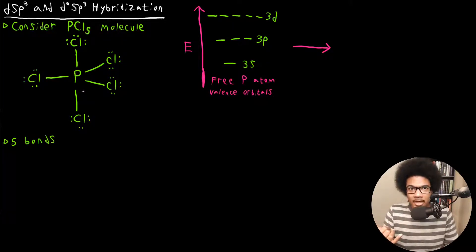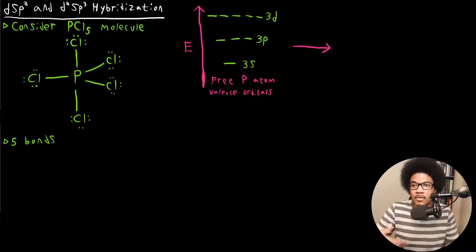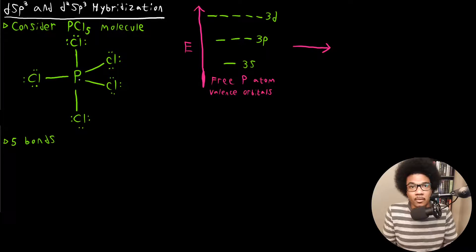SP3 is not going to do that. SP2 or SP is not going to do that. So clearly we need a different hybridization scheme in order to form this PCl5 molecule. Phosphorus is going to have to orient its orbitals in a way that accommodates this trigonal bipyramidal shape and forms five bonds. So what phosphorus is going to do is adopt the DSP3 hybridization.